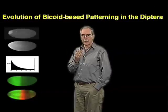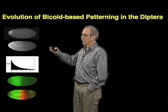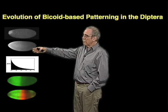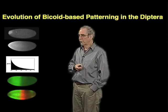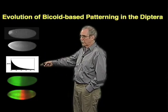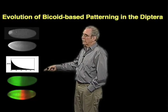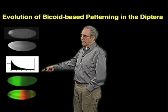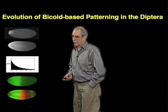The reason why this bicoid gradient is important is that it is thought to be the major determinant in establishing the pattern of gene transcription in the embryo, such that different concentrations of the bicoid protein at different points along the anterior-posterior axis activate expression of particular genes like the hunchback gene in green here, or the cripple gene in red.